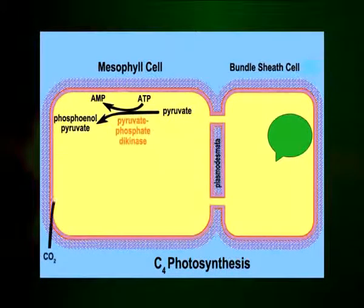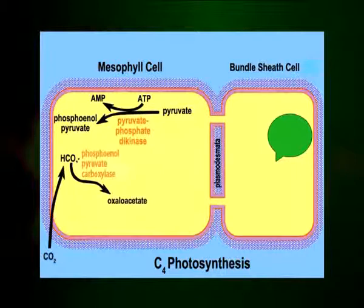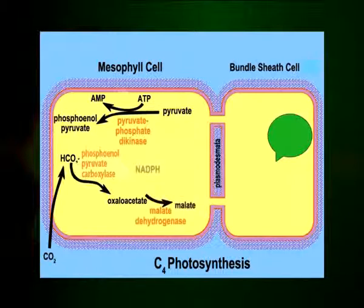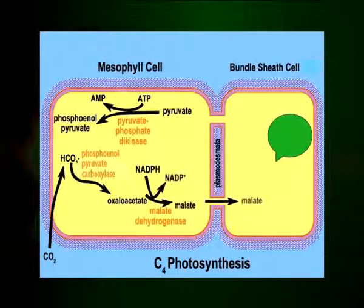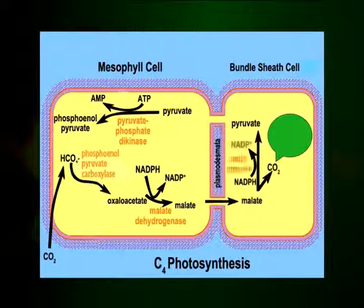The oxaloacetate is converted to malate, a simple organic compound, which is transported to the bundle sheath cells. Inside the bundle sheath cells, malate is decarboxylated to produce carbon dioxide and pyruvate. The carbon dioxide now enters the Calvin cycle and pyruvate is transported back to the mesophyll cells.